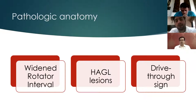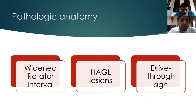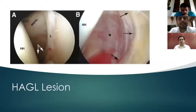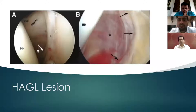A widened rotator cuff interval means that the coracohumeral and superior glenohumeral ligaments are not adequately tensioned in external rotation and the capsule is bulging out, leading to anterior inferior and posterior dislocation. HAGL lesions — humeral avulsions of glenohumeral ligaments — are rare but can cause an unstable shoulder. A drive-through sign is when the capsule is so lax that the scope passes through the glenohumeral ligaments without any resistance. The image shows a normal anatomy with the MGHL passing over the subscapularis at 45 degrees, versus a HAGL lesion where the capsule is completely separated.